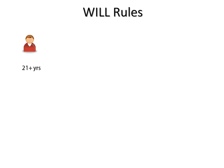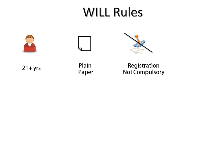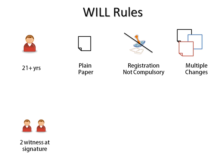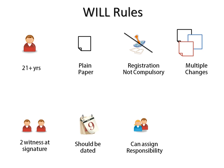Now we'll see some important rules of a will. A person has to be at least 21 years old at the time of writing the will. A will can be written on a plain paper — there is no specific format. Registration of a will is not compulsory. A will can be changed multiple times. Two witnesses are required at the time of signature, and once the main person signs, the two witnesses will also put their signatures. The will should be clearly dated so it can be determined when it was written.